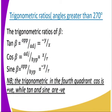We go to the fourth quadrant — this is where we have angles greater than 270 degrees. Tan beta is opposite over adjacent, which is negative y divided by x. Cos beta is adjacent over hypotenuse, which is x divided by r. And sin beta is opposite over hypotenuse, which is negative y divided by r. In the fourth quadrant, only cos is positive while tan and sin are negative.